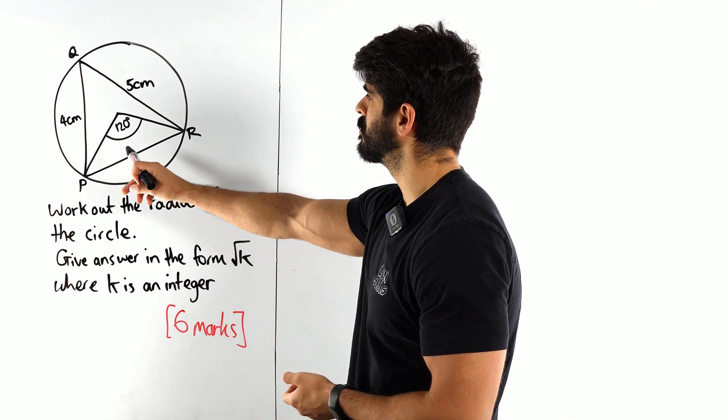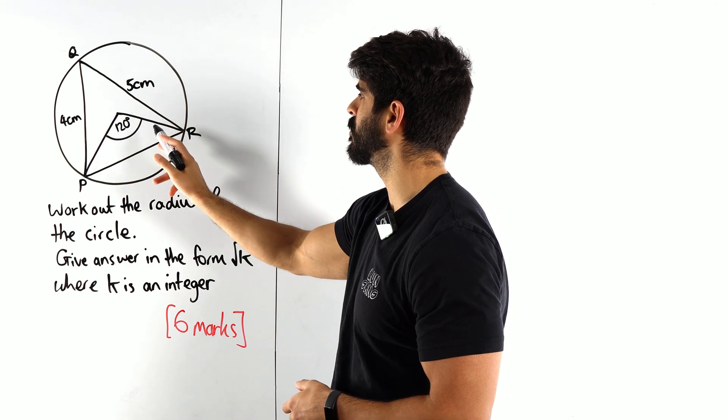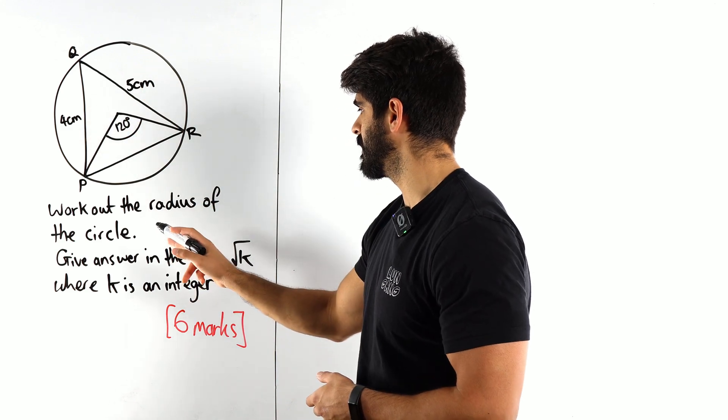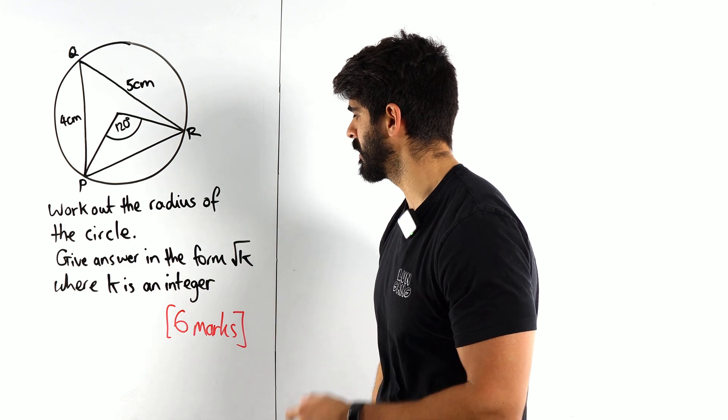So we have this circle with PQR on the circumference, the center here, 120 degrees, this length is 4, this is 5. They said work out the radius of the circle. Give your answer in the form root K where K is an integer.